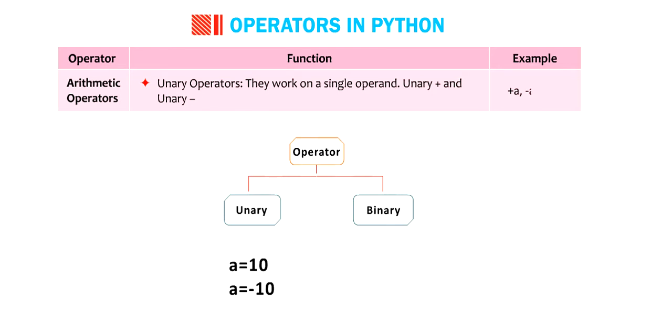Unary plus and unary minus. Example, plus a, minus a. Binary operators. They work on two operands.